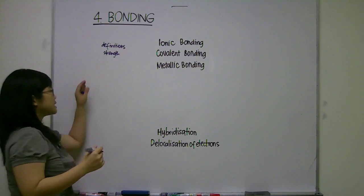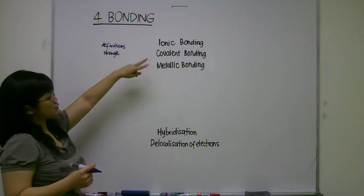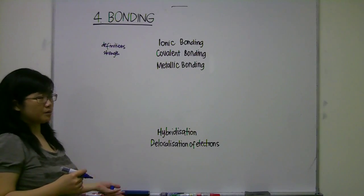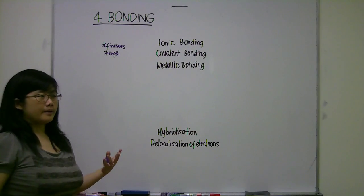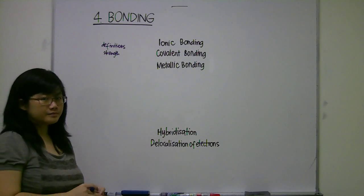You need to be discussing what the strength of each bond depends on. For example, ionic bonding depends on the size of ion and charge of the ion and stuff like that.